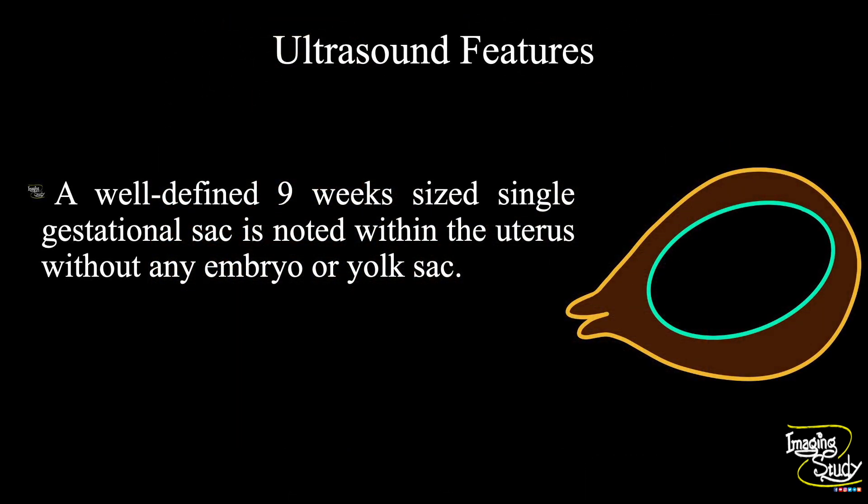In summary, a well-defined nine-week sized gestational sac is noted within the gravid uterus without any internal embryo or yolk sac. Both adnexa appear normal. So the diagnosis is blighted ovum.